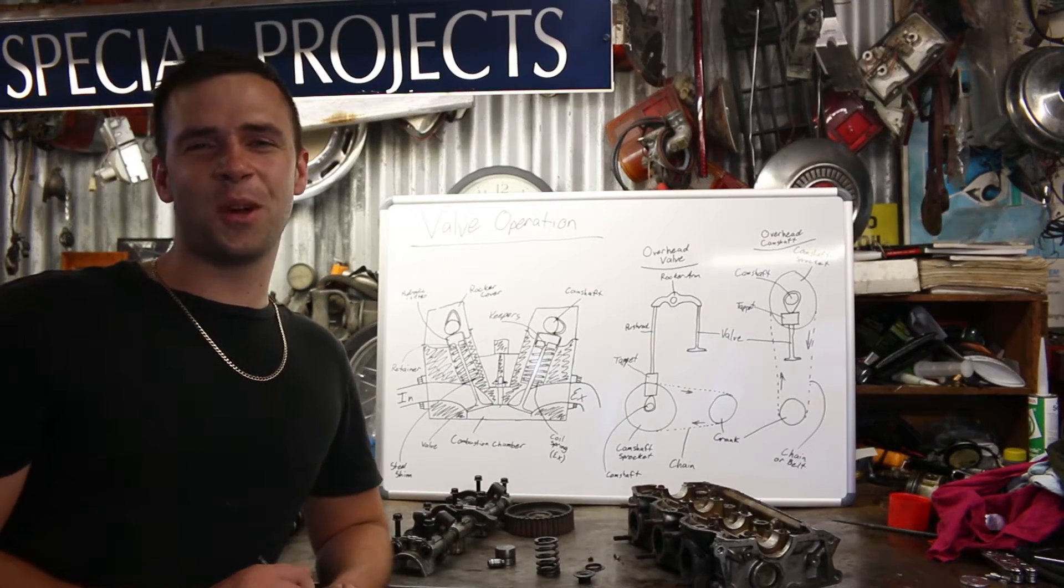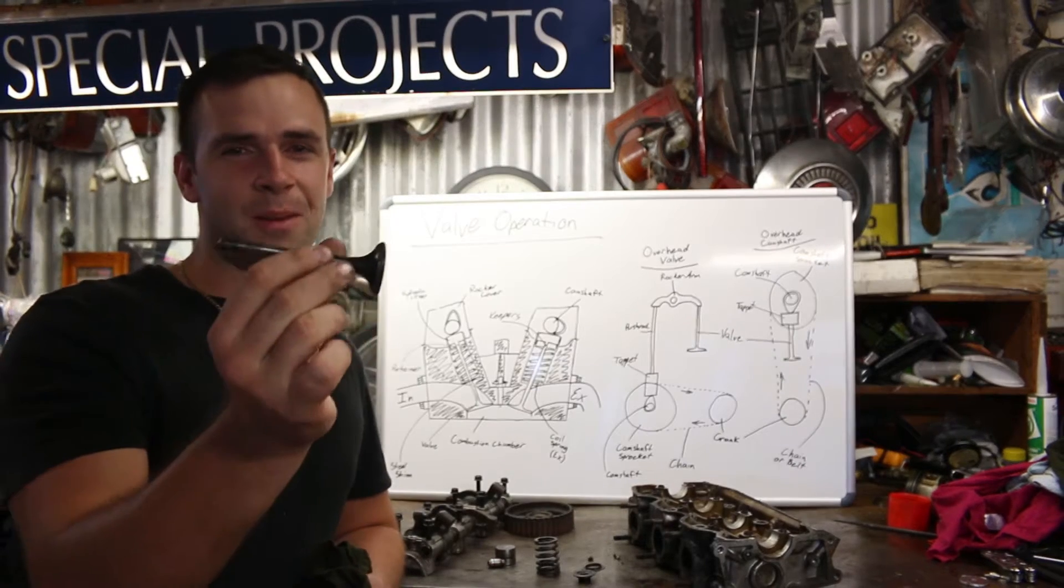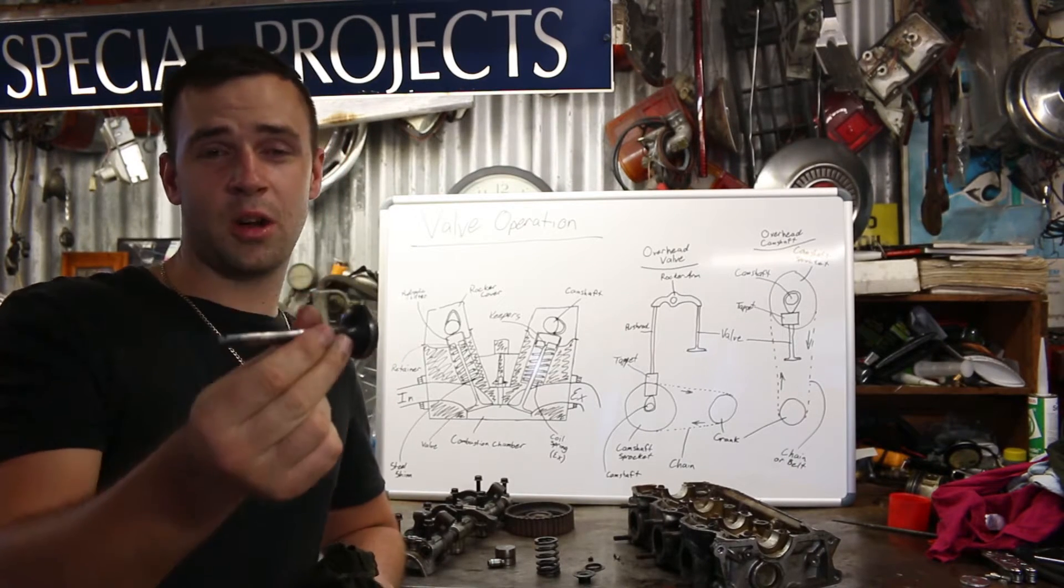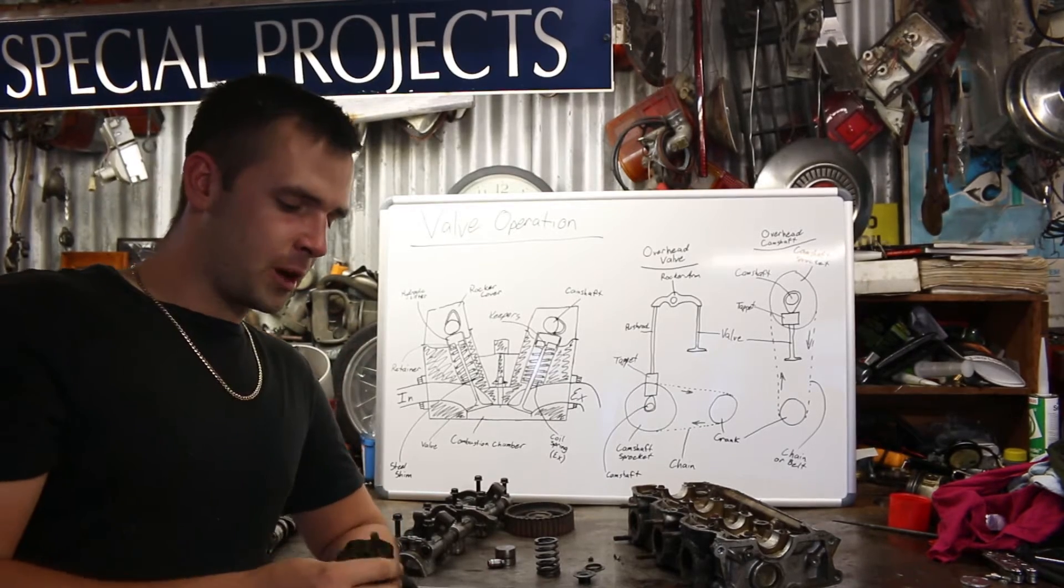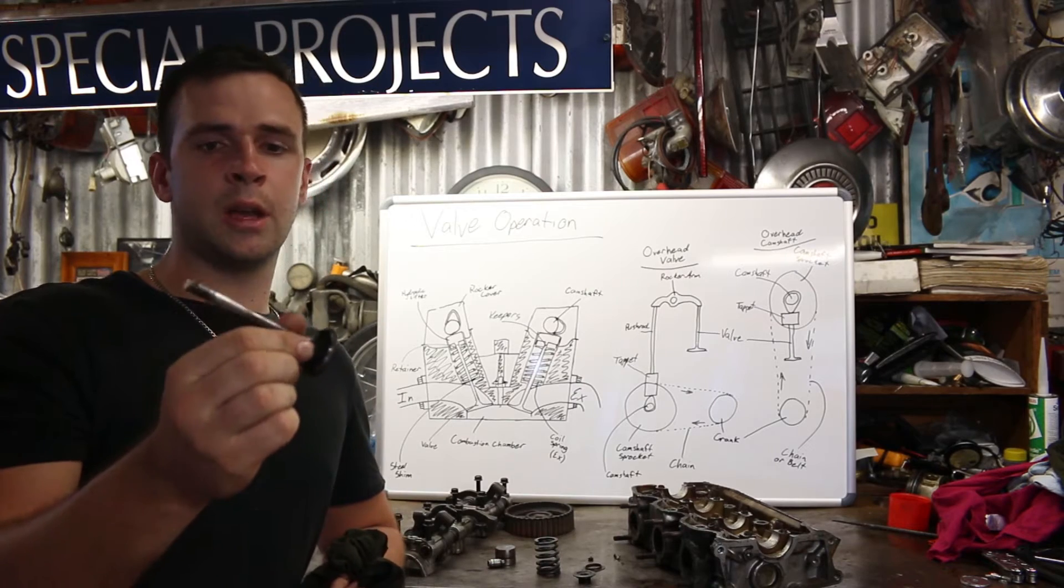What's going on guys? In today's video we're going to be talking about valve operation. Basically what that means is we're going to be talking about this thing right here. So this is a valve out of a V6 Holden Commodore. We're going to be covering the basic operation of these valves and what they do and how they're operated.